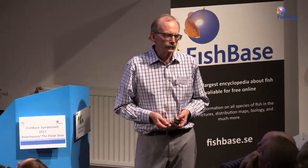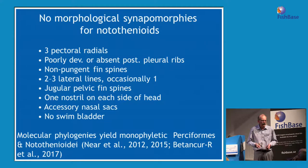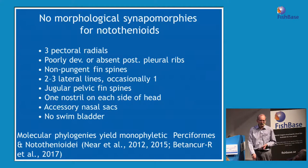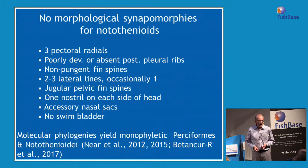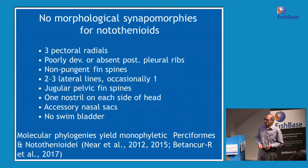Unfortunately, we have no morphological definition for notothenioids. I'm an anatomist; I've spent my whole career working on them and couldn't find anything. I looked at a lot of unusual systems — nervous systems, special sense organs — hoping to find something that set them apart. They're diagnosed by an extremely generalized set of characters that are supposedly unique and common.